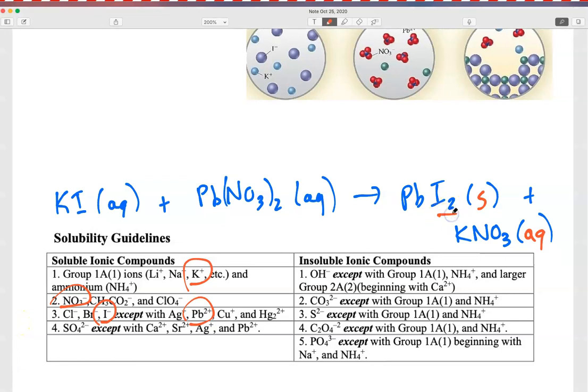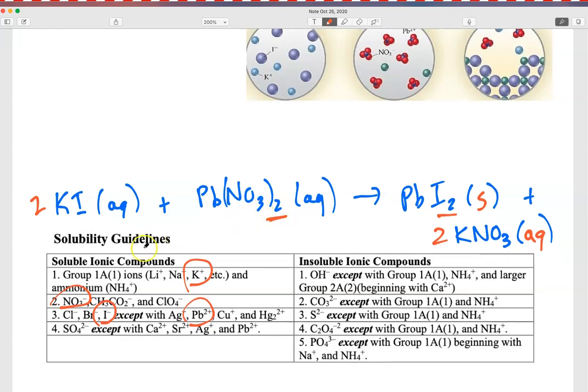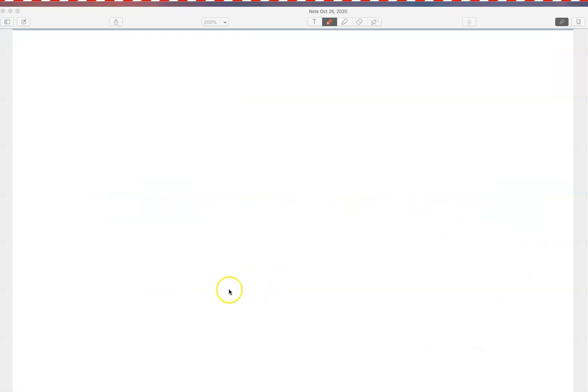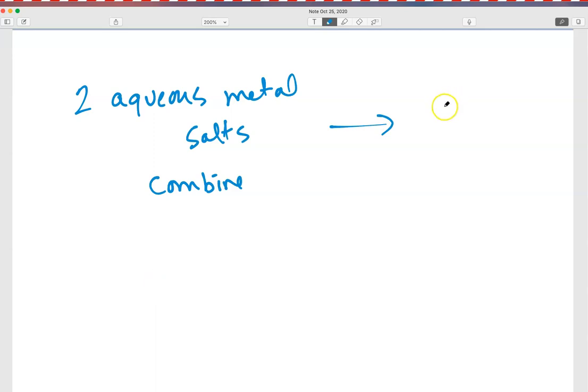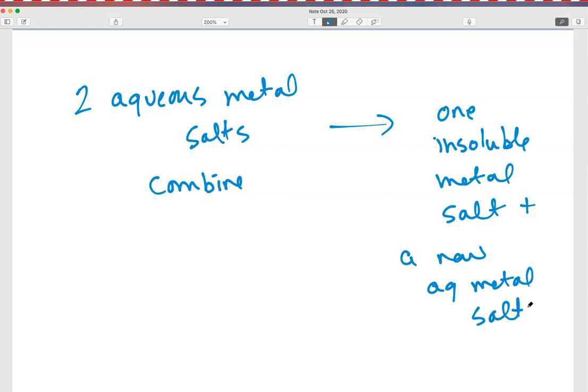We would want this reaction to be balanced. I have two iodides on that side, so I'm going to put a 2 out in front of the potassium iodide, which then also requires a 2 in front of the potassium nitrate, which then balances my nitrate in the original reactant. I want to think about this in terms of a pattern that you can look for. Look at it in terms of we start out with two aqueous metal salts that combine to form one insoluble metal salt plus another aqueous metal salt. Remember, we're not really forming a new aqueous metal salt because those ions are still free and moving around separate from each other in solution. So just be careful that you're thinking about this correctly on a molecular level.